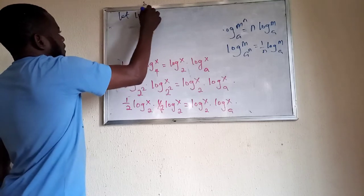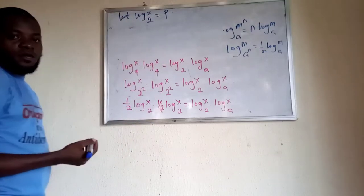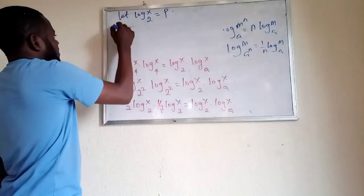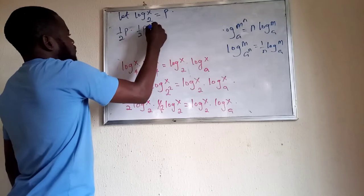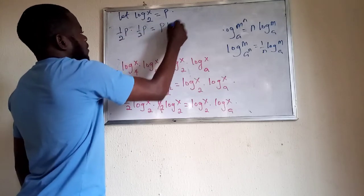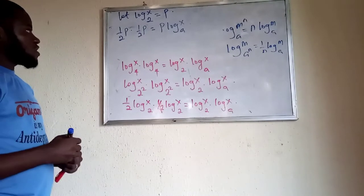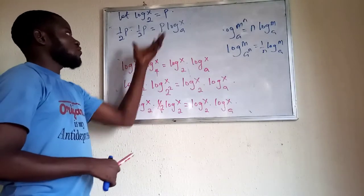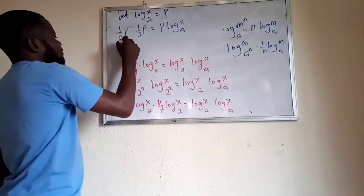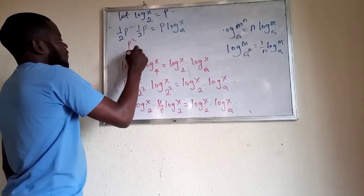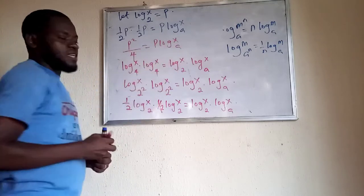Let p equal log x in base 2. We replace all instances of log x in base 2 with p. So we have 1 over 2 times p, times 1 over 2 times p, on the left side, equal to p times log x in base a. This gives us p squared over 4 equals p times log x in base a.